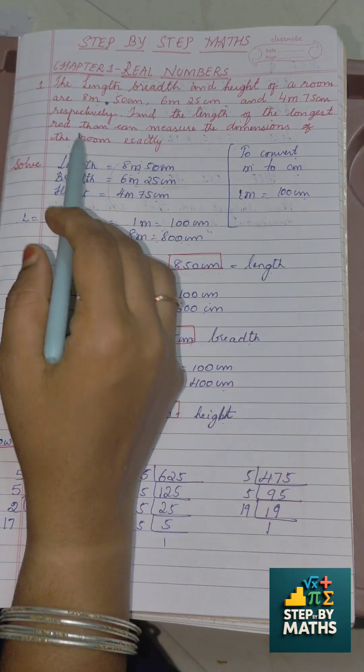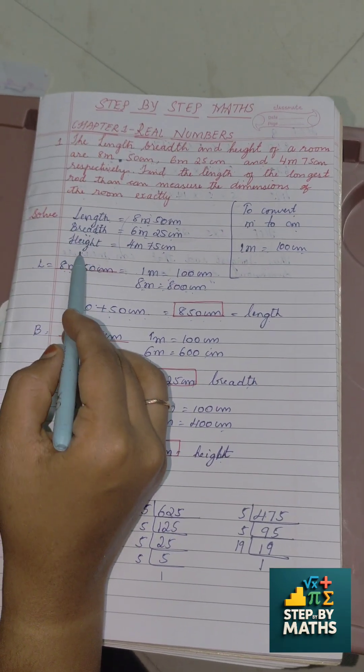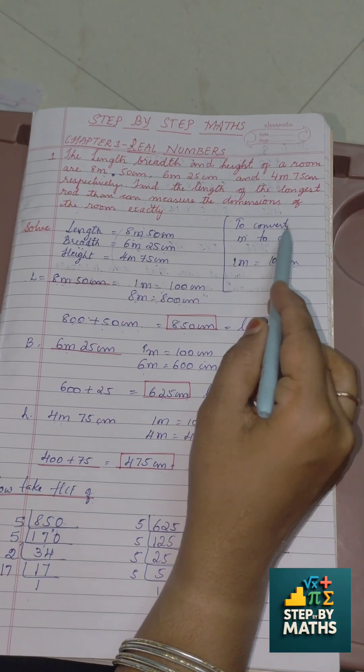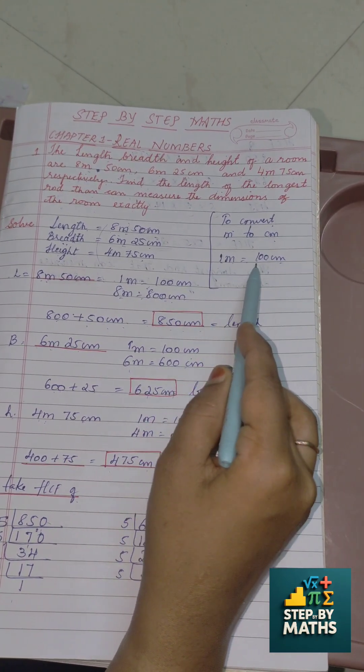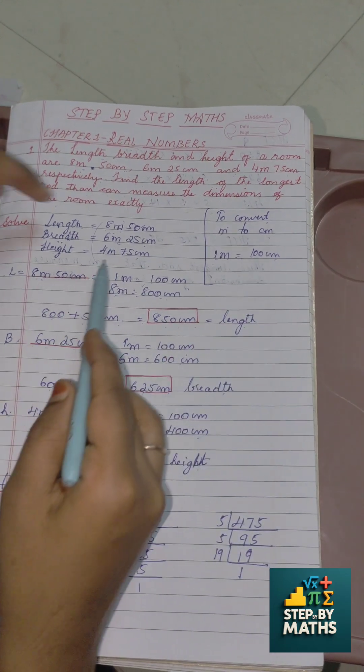As the room is in a cuboid, the length, breadth, and height is given. To convert meter into centimeter, 1 meter is equal to 100 centimeter.